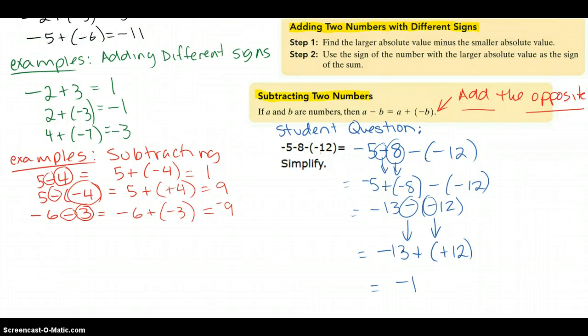One more thing I want to say, the reason that it's negative 1 is because these are different signs, so we know we subtract. 13 minus 12 is 1. 13 is larger than 12, and that's why it's negative.